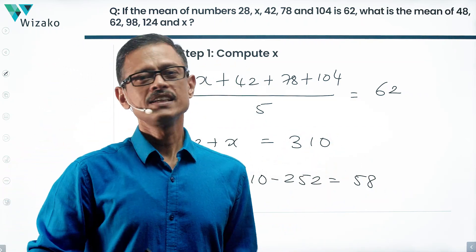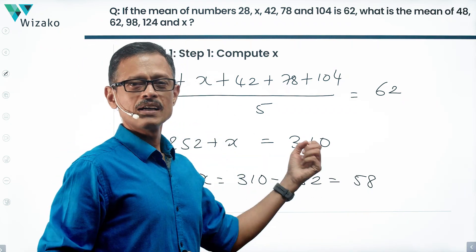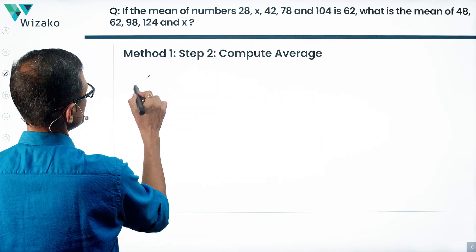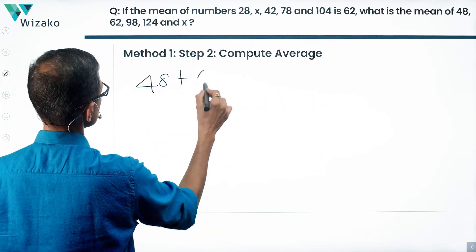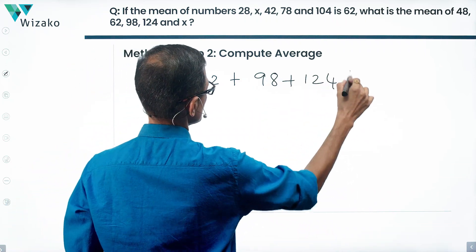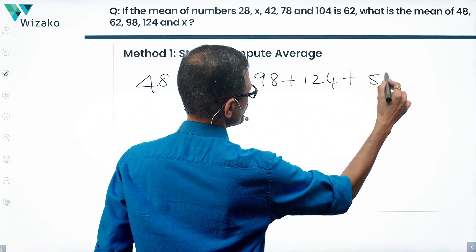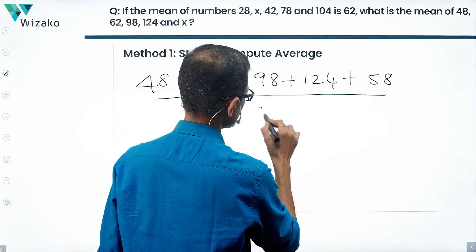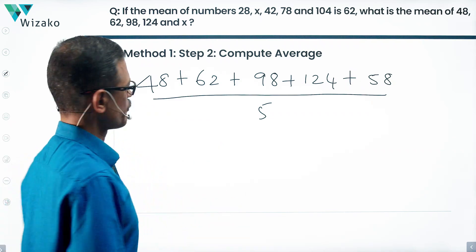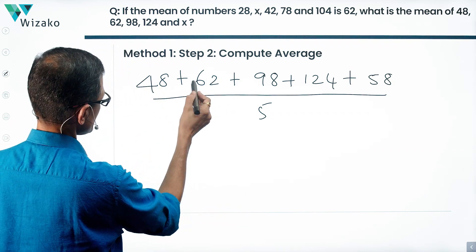What we're interested in is computing the average of these five numbers, which includes x. Having got the value of x, let's plug that in to the second set of numbers: 48 plus 62 plus 98 plus 124 plus x, which we computed to be 58. 58 divided by 5 should give us the answer. A little bit of calculation — conceptually, very straightforward. 62 plus 48 is 110.